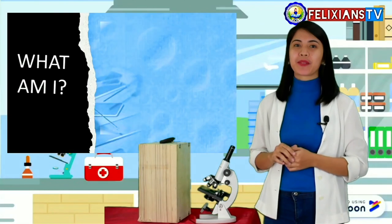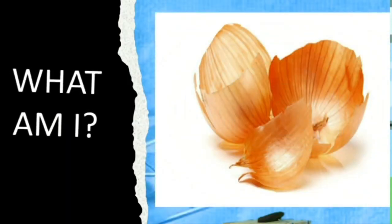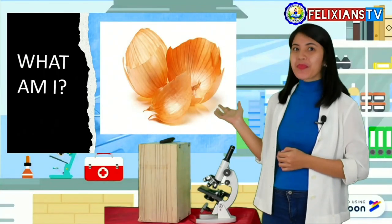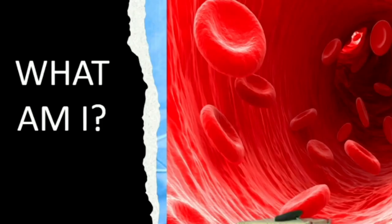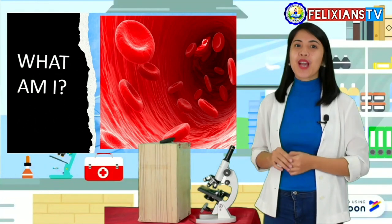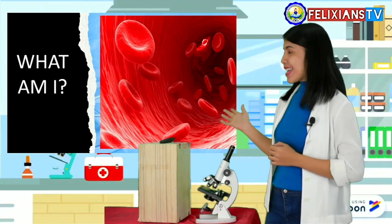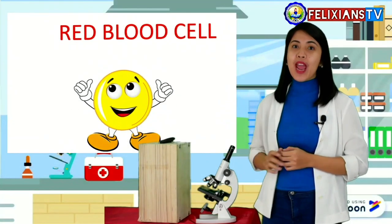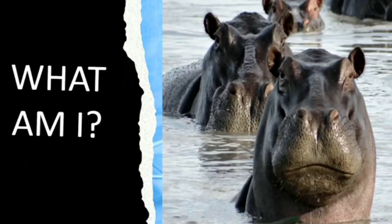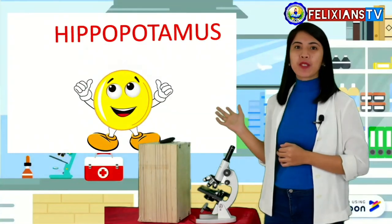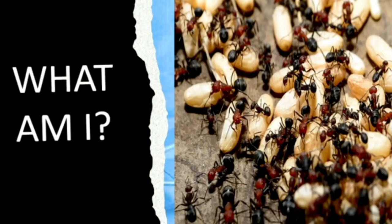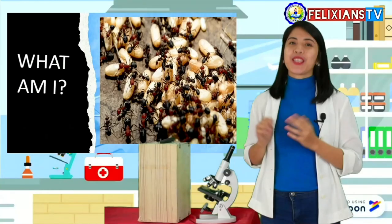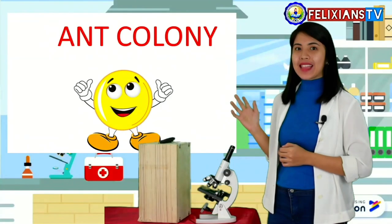How about the second picture? Correct! That is an onion skin. And for the third picture? You are correct! That is a red blood cell. And for the fourth picture? Great job! That is a hippopotamus. And the last picture? You are right! That is an ant colony.